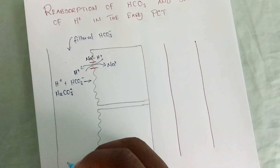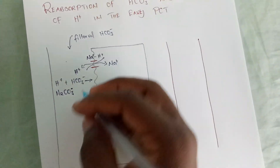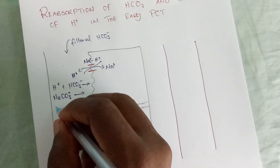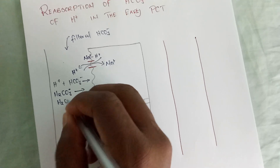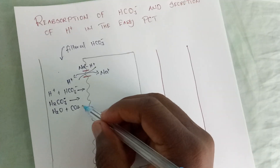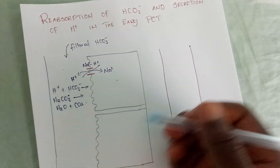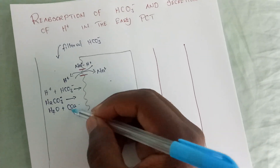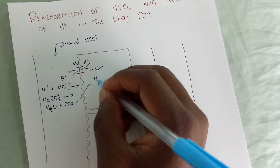This weak carbonic acid, since it is weak, will dissociate. When it dissociates, it will form water and carbon dioxide. This carbon dioxide will then freely diffuse into the cell, along with water.